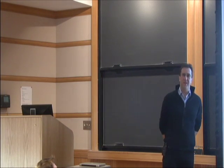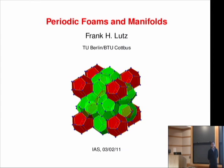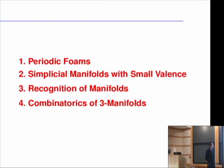Thanks for the invitation to speak here. Here you see a first example of a periodic foam. In the center of these cells you find atoms, and this is a Voronoi diagram of those atom positions. It's periodic, so you can extend it to a three-space. We will start with the foams, then come simplicial manifolds with small valence, recognition of manifolds, and at the end we will see some of the combinatorics of three-manifolds.